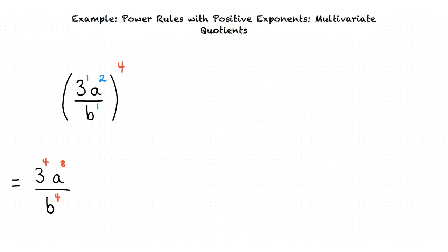Now that our expression is rewritten, we can simplify where possible. The only thing that can be simplified further is 3 to the fourth power. 3 to the fourth power equals 81, so our final answer is 81a⁸ over b⁴.